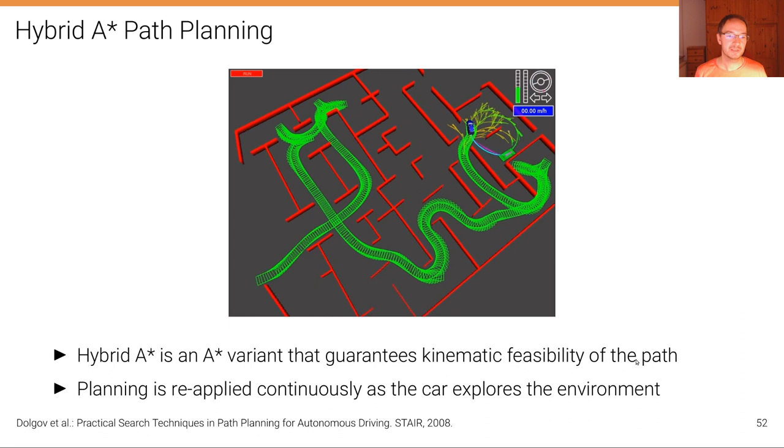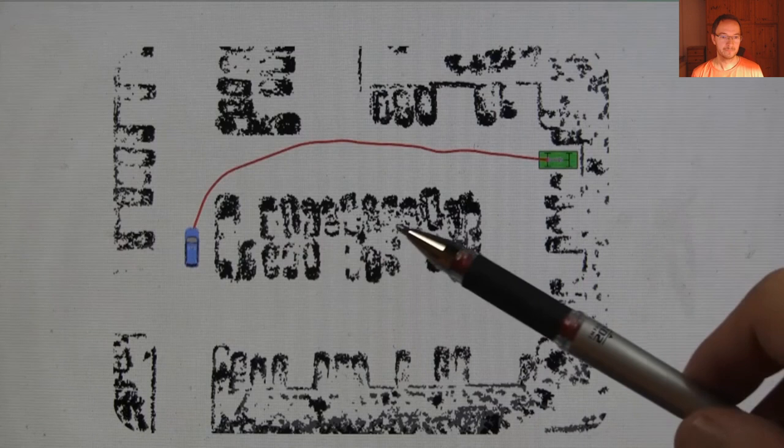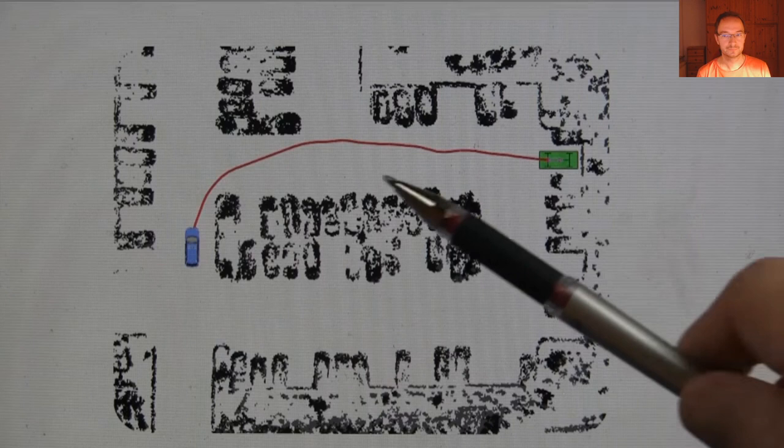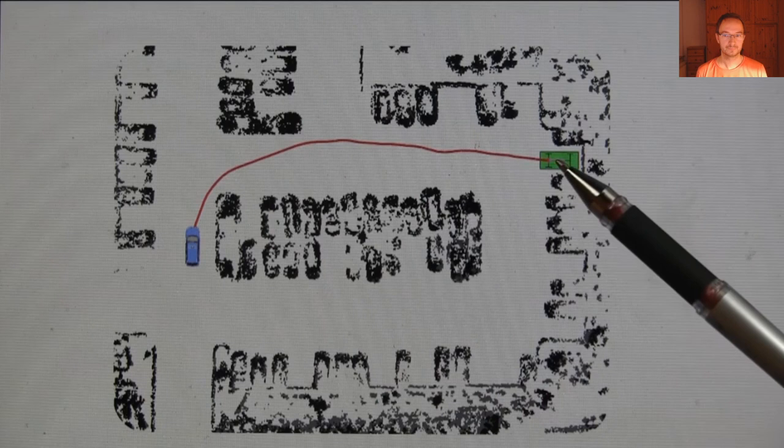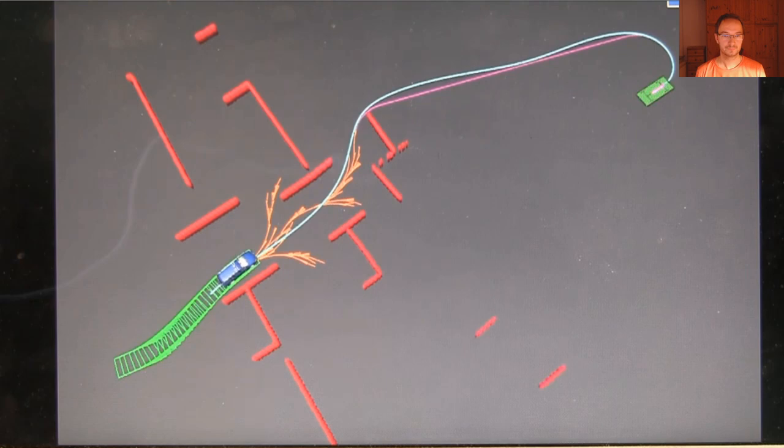Here's another example for a planning scenario with the A star algorithm. This is actually an example from the Stanley vehicle, where they used what they call the hybrid A star algorithm, which is an A star variant that guarantees kinematic feasibility of the path, where planning is reapplied continuously as the car explores the environment. Here is an actual result of applying this A star algorithm for a vehicle that sits over here. These are laser scans of parked cars and a target location over here. While the curve isn't super smooth, you can still see it is able to find a continuous and drivable curve to the parking location over here by this small but important modification of A star.